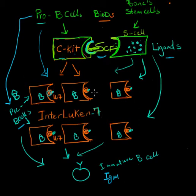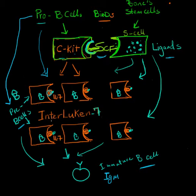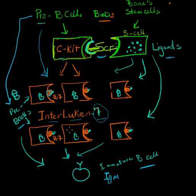These ligands are also made by the stem cell. The ligands go into the receptors on the pre B cells and tell them to make B cells — the B cells we know that make antibodies. These receptors are called interleukin-7 receptors. As soon as the ligands attach to the receptors, it tells the cell it's time to differentiate and move forward.